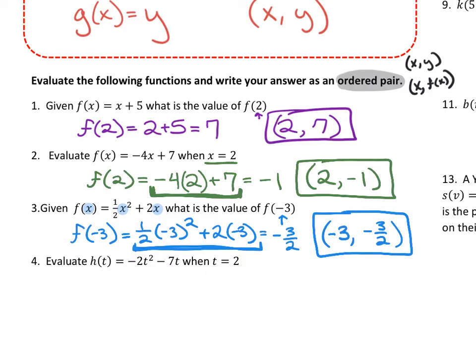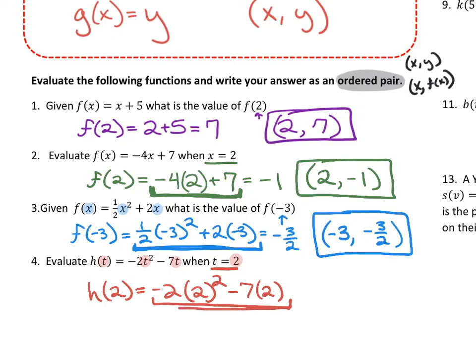Number four has h of t equal to negative 2t squared minus 7t, and asks us to evaluate when t equals 2. So I plug in 2 for every t: h of 2 equals negative 2 times (2) squared minus 7 times 2. I've replaced every single t from the original function with 2. Following PEMDAS through a calculator, the output is negative 22, giving us the coordinate (2, −22).